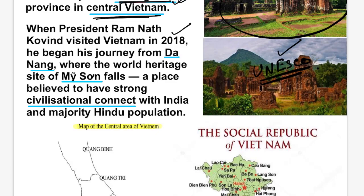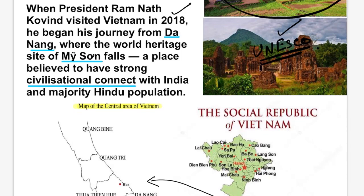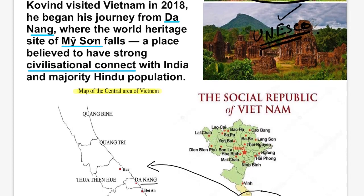There are many world heritage sites in Vietnam. The place is believed to have a very strong civilizational connection with India, with the majority of the population following Shaivite Hinduism, which is related to India. That is why there is a strong civilizational connect between India and Vietnam in relation to this Cham Temple Complex.